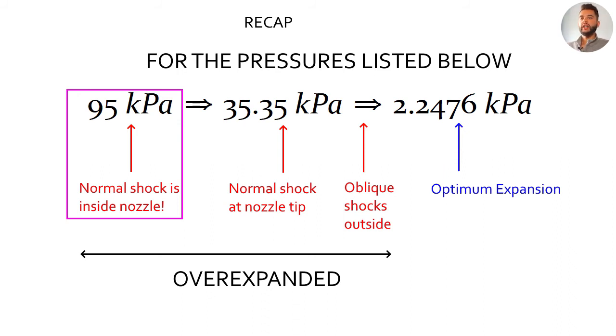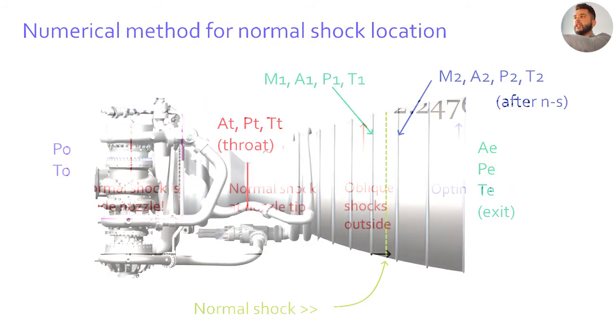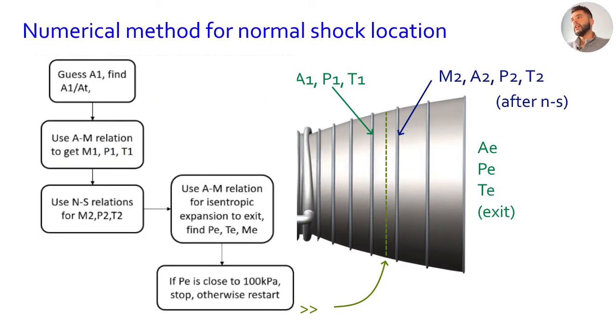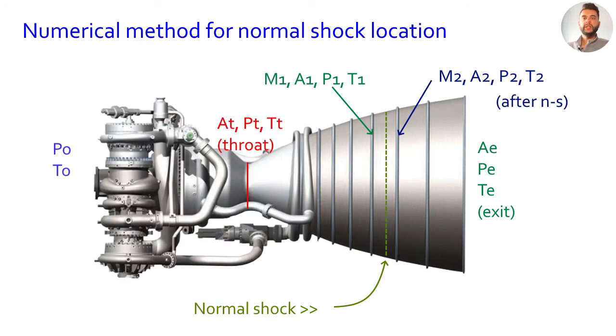To find the normal shock solution I do recommend you do this yourself. I did write a MATLAB code to achieve this. You just simply make a diagram like shown here and then you consider a normal shock at a location and then the flow chart which I used and then you can use that to make your own code and do it. It's definitely a numerical method.